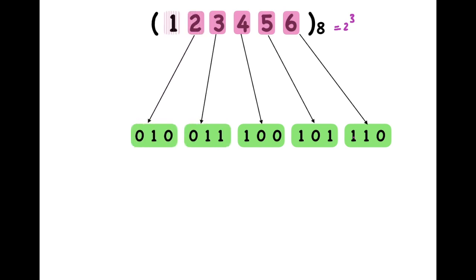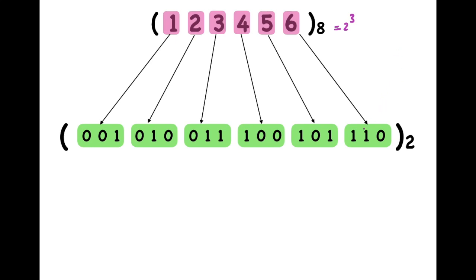This is the binary representation we have now. From binary to any other base that is a power of 2, the conversion is very simple: if you're converting to base 2 to the power b, starting from the rightmost bit you make groups of size b bits. Then the next step is to convert every group to its decimal equivalent. Let's see this in detail with the binary representation we obtained.